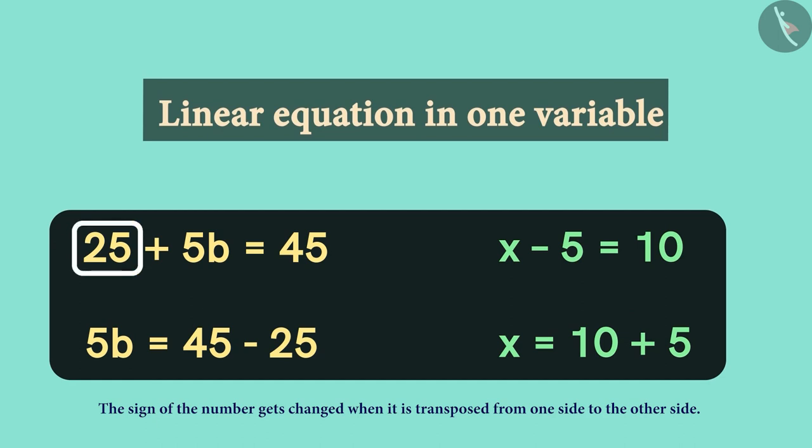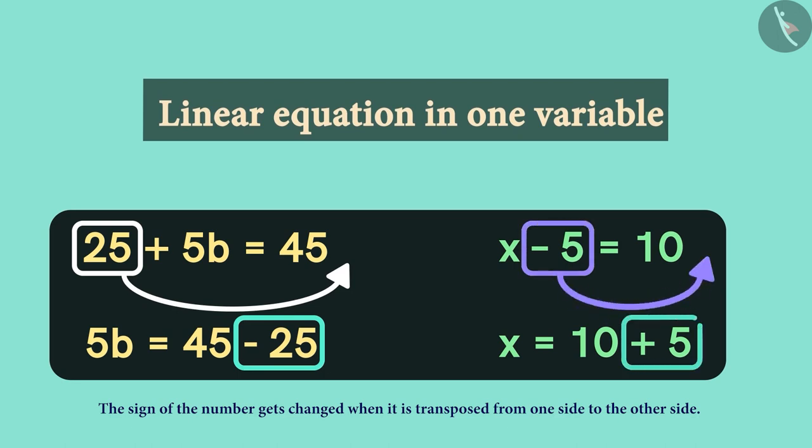If a number is a positive number on one side, after transferring it becomes negative. And if a number is negative on one side, it becomes positive on moving to the other side. This means addition becomes subtraction and subtraction becomes addition.